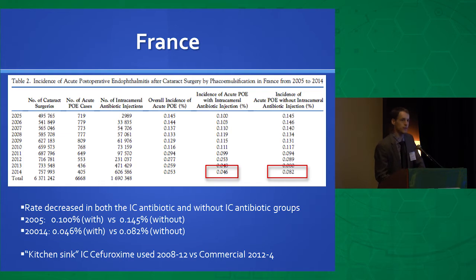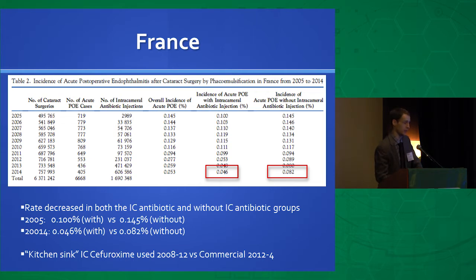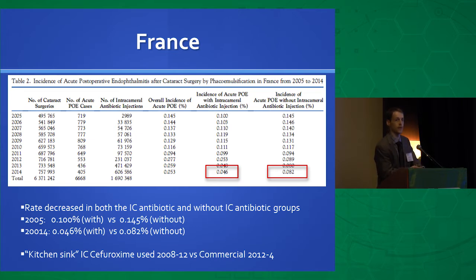France showed the same thing. They started using moxifloxacin, diluting it themselves during the case. Looking at 2008 to 2012 versus commercially available cefuroxime from 2012 to 2014, the rate of endophthalmitis was significantly lower with the commercial product. That shows that dilution when preparing it yourself might be an issue, although the rate is still much lower when you give any form.